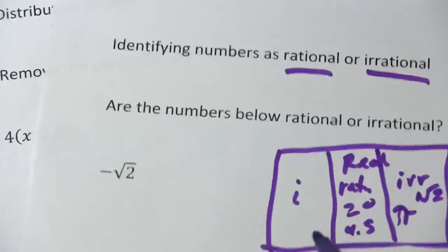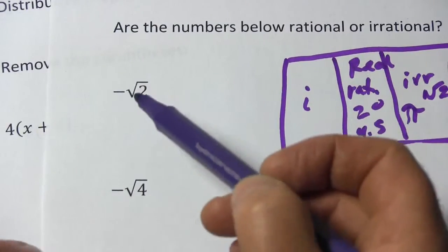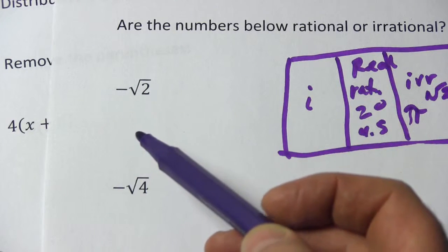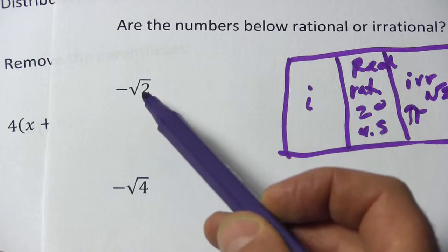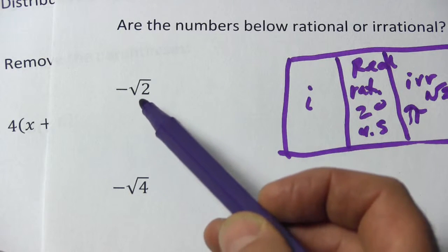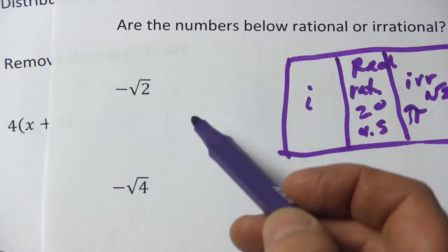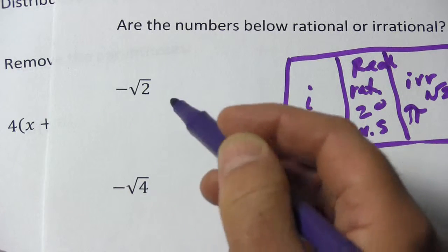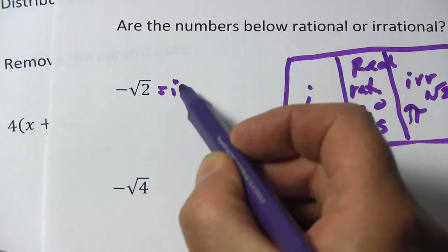Alright, so let's take a look at some of these. This first one is the negative square root of 2. Well, I just mentioned the square root of 2 is one of those numbers, and if you punch it in your calculator, you'll see the decimal appears to go on forever and it doesn't repeat itself. Putting a negative sign in front of that doesn't change that fact, so this one is irrational.